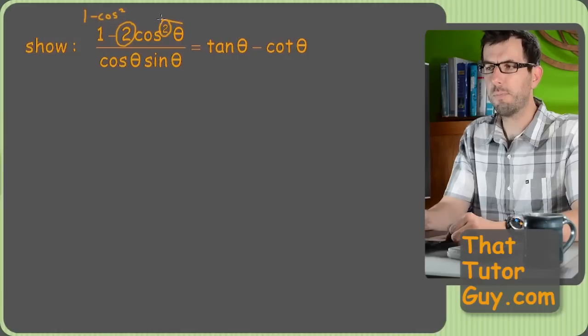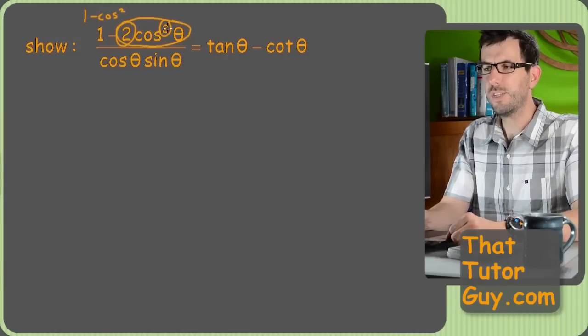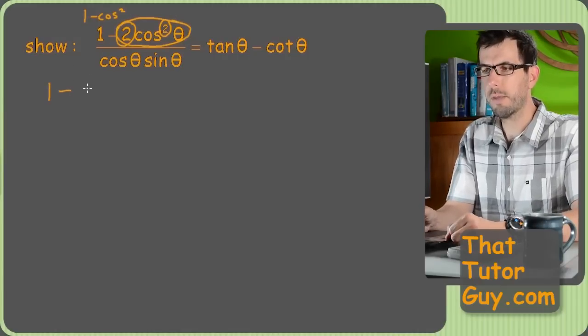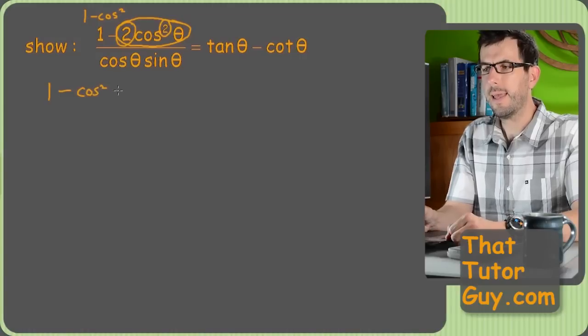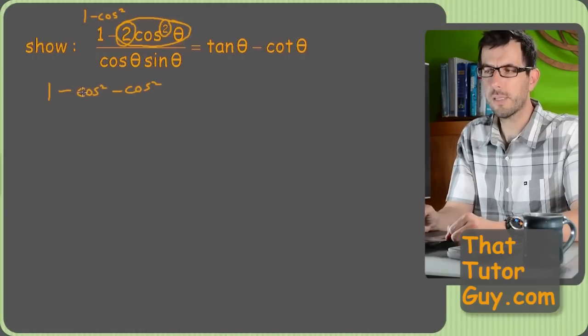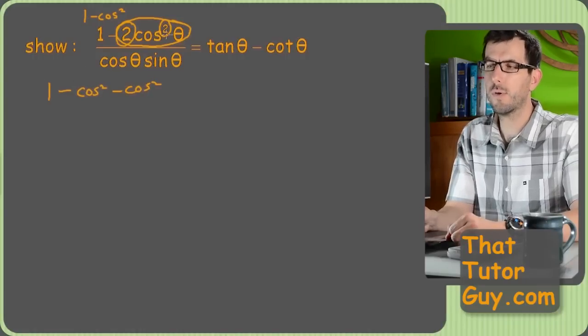So what I'm going to do is I'm actually going to split this into two separate things. So I'm going to, instead of one minus two cosine squared, I'm going to make it one minus cosine squared minus cosine squared. Now you can see this was legal because if I had given you this at first, you could just say, oh, combine like terms, negative cosine squared, negative cosine squared is negative two cosine squareds.